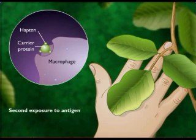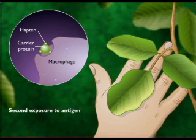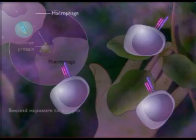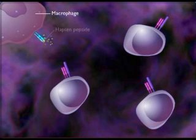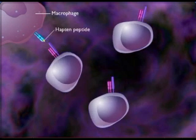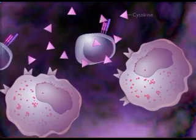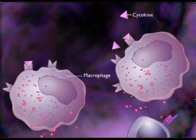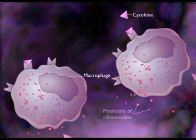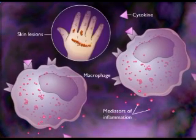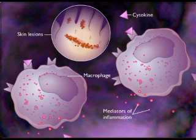When the host comes in contact with the allergen a second time, the TH1 cells react with the hapten peptide being presented on the macrophage and release cytokines, resulting in attraction of more macrophages, followed by inflammation and skin lesions. Characteristic skin lesions appear after 24 hours, reaching their peak at 48 to 72 hours after the second exposure to the plant.